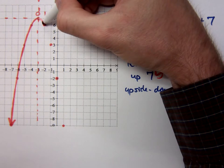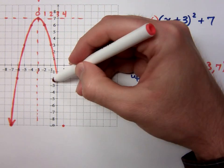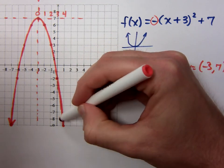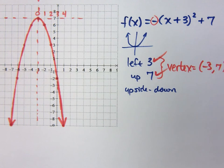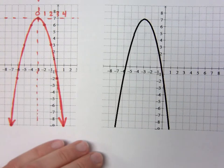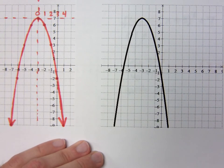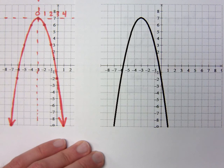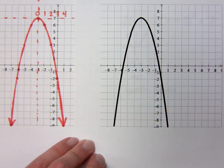Is this going to give us that parabolic shape that we were expecting? Yes. Now we just need to graph this. Arrows go at the end. You will graph this all the way to the edge of your graphing window. Do you guys have questions? You want to verify? No arrows on the verification, but yes, this basic shape is correct. You did a great job.